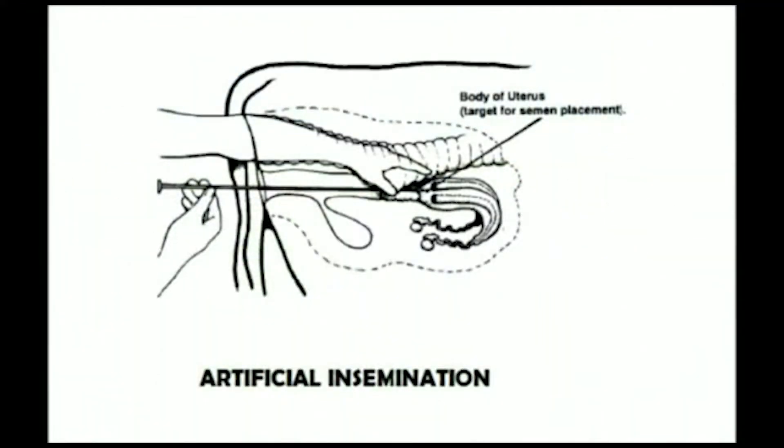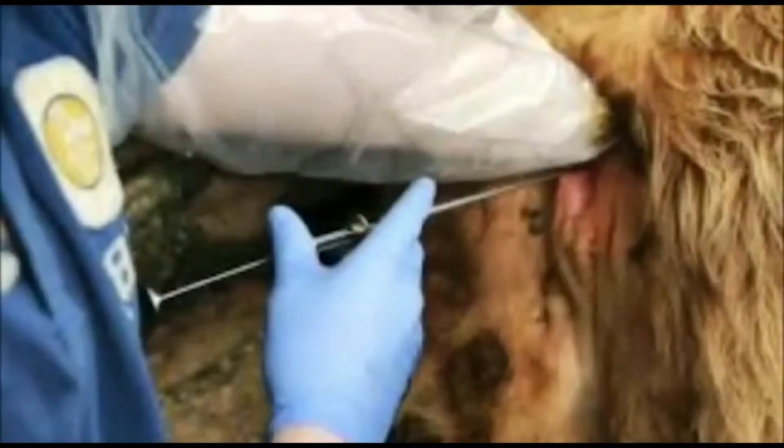Artificial insemination is a process of injecting the semen into the uterus of the cattle. Having knowledge on heat formation increases the success rate of artificial insemination, otherwise it causes reproductive failure and certain genital diseases. Maintaining a record about previous calving helps in predicting the heat formation period.